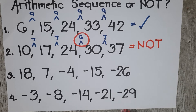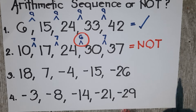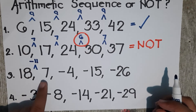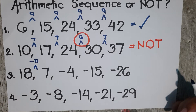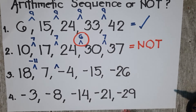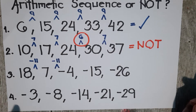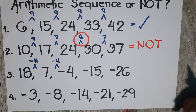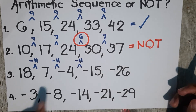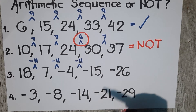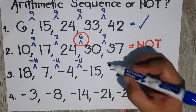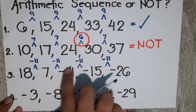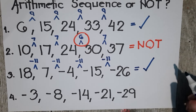Let's go to number 3. From 18 to 7, the common difference is negative 11, because 18 plus negative 11 gives you 7. From 7 to negative 4, the common difference is negative 11 as well, because 7 plus negative 11 is negative 4. From negative 4 to negative 15, the common difference is negative 11, because negative 4 plus negative 11 gives you negative 15. And finally, from negative 15 to negative 26, the common difference is also negative 11. Since all common differences are the same, this is also an arithmetic sequence.